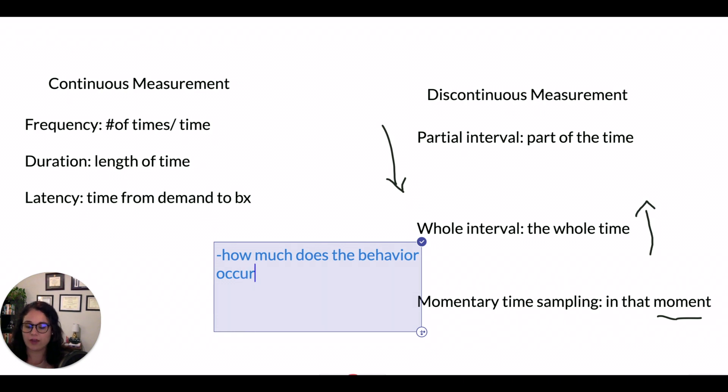Does it occur at high rates? Does it occur 100 times a day? If so, you're going to possibly yield inaccurate results or inaccurate data if you're using frequency because the chances of me counting 100 and you counting 100 are going to be low.